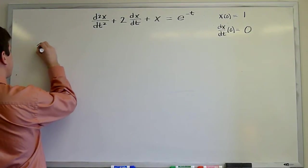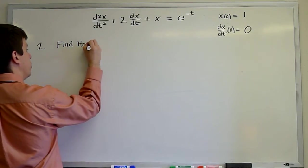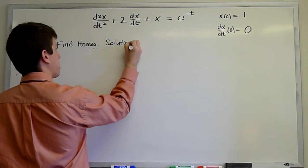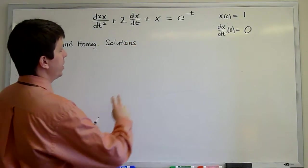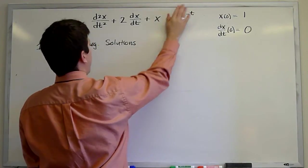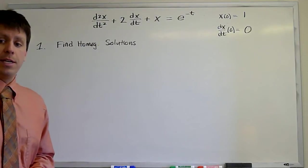Step one is to find the homogeneous solutions. To do that, we look at the associated homogeneous problem, where this term has been set to zero. And that homogeneous problem we would solve using a guess, e to the lambda t.